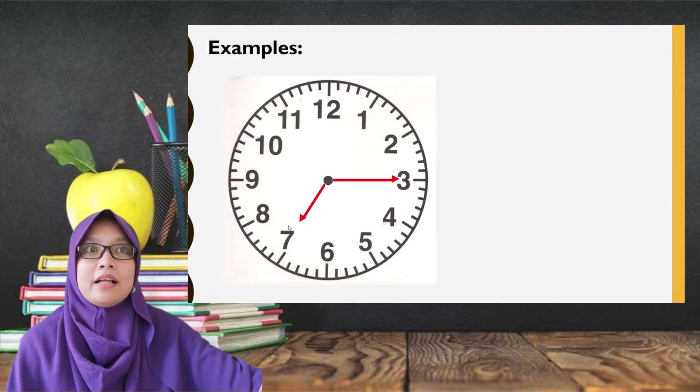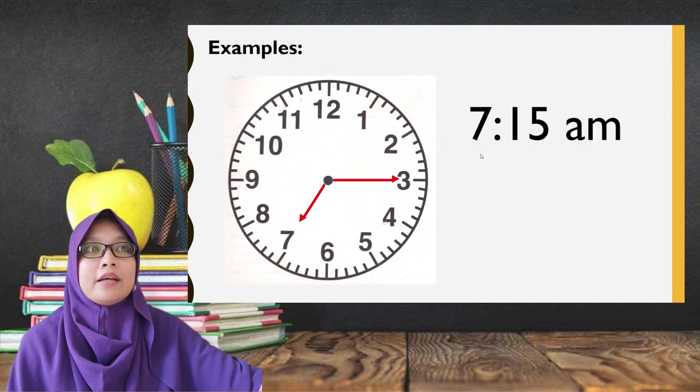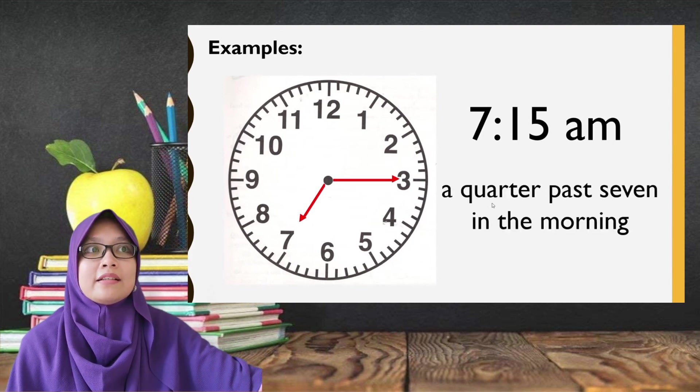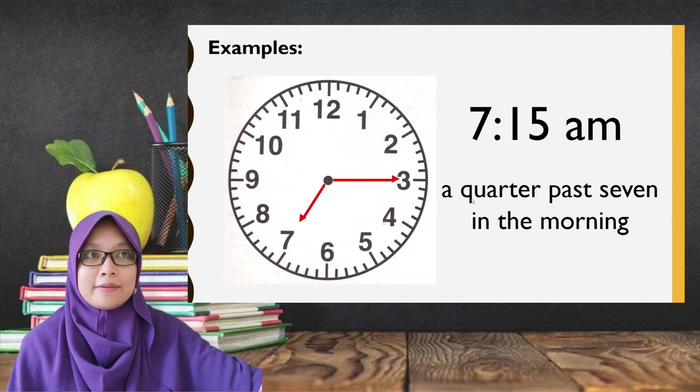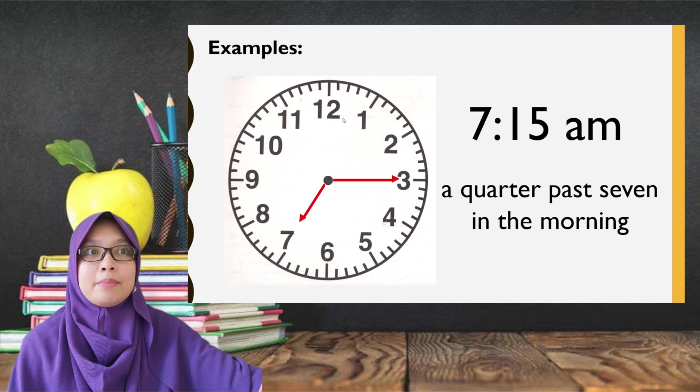For example, the clock here shows 7.15 am. 15 minutes has passed the hour. So, in formal way, we can say it as a quarter past 7 in the morning. As we can see, 15 minutes has passed from here.